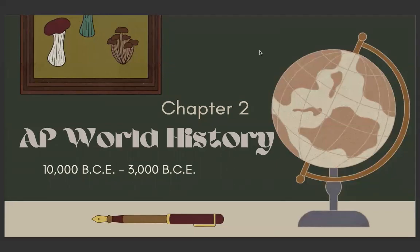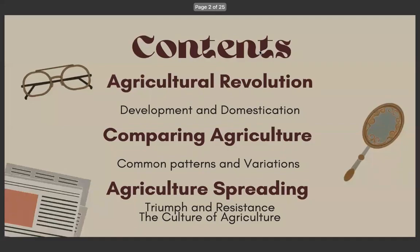Hello everyone, today we'll be going over Chapter 2 of AP World History from 10,000 BCE to 3000 BCE. Some of the contents we'll be going over today is the Agricultural Revolution, which will cover development and domestication; comparing agriculture, where we will go over common patterns and variations; and finally, agriculture spreading, where it will cover the triumph and resistance and the culture of agriculture.